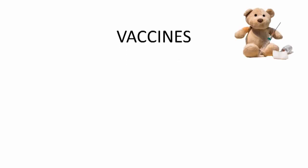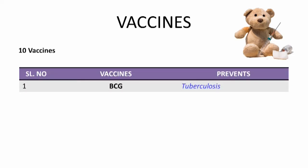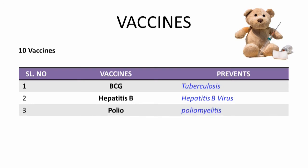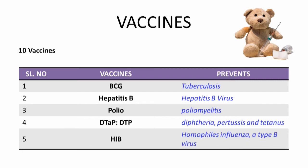First, let's go through the vaccines. There are 10 vaccines given to children. First, BCG vaccine protects the child against tuberculosis. Second, hepatitis B is given to protect the child against hepatitis B virus. Third, polio vaccine to prevent poliomyelitis. Fourth, DTAP is given for diphtheria, pertussis and tetanus. Fifth, HIB vaccine is given to protect against Haemophilus influenzae type B.